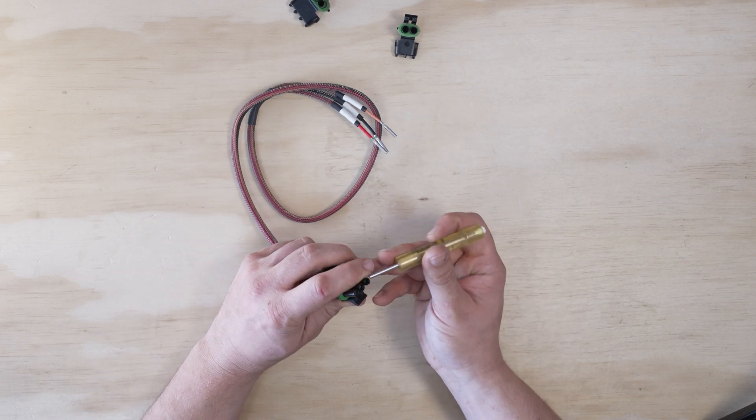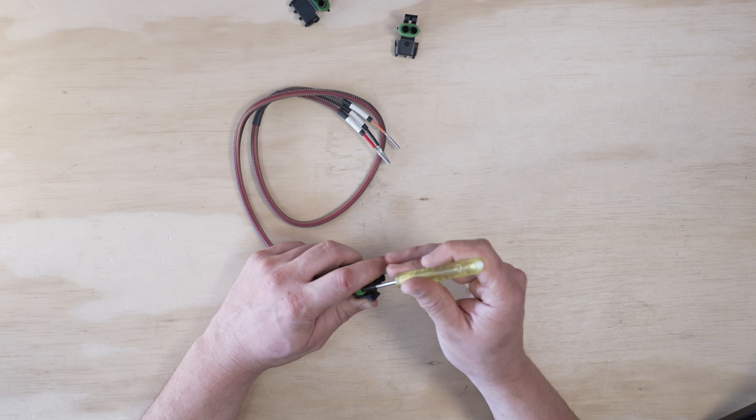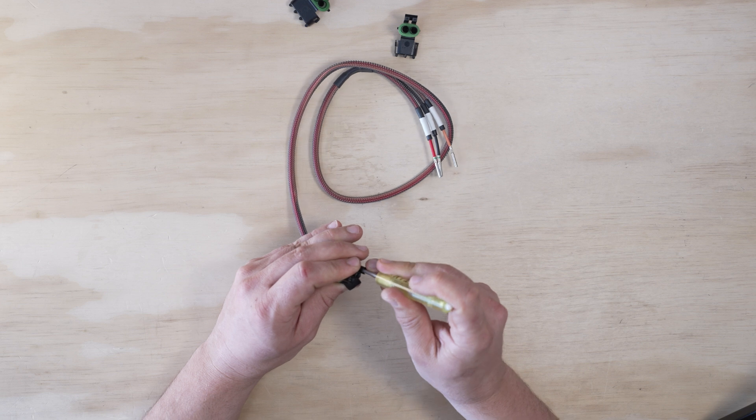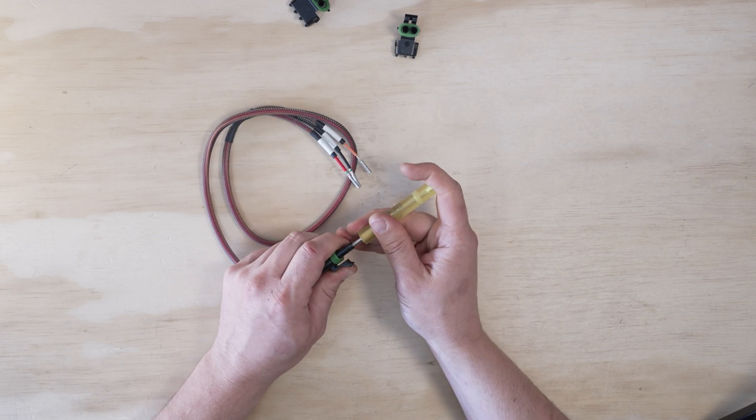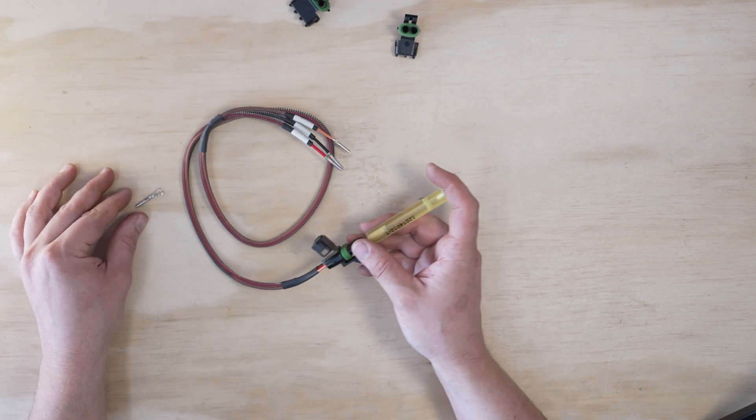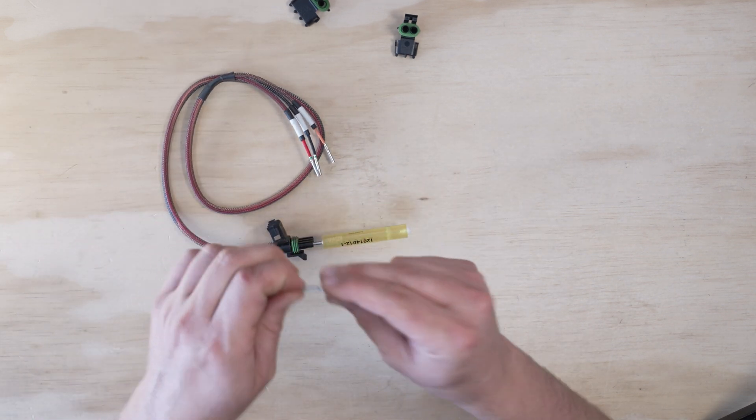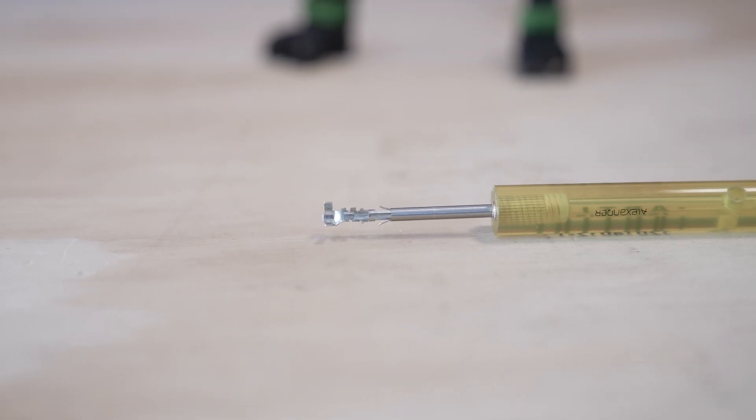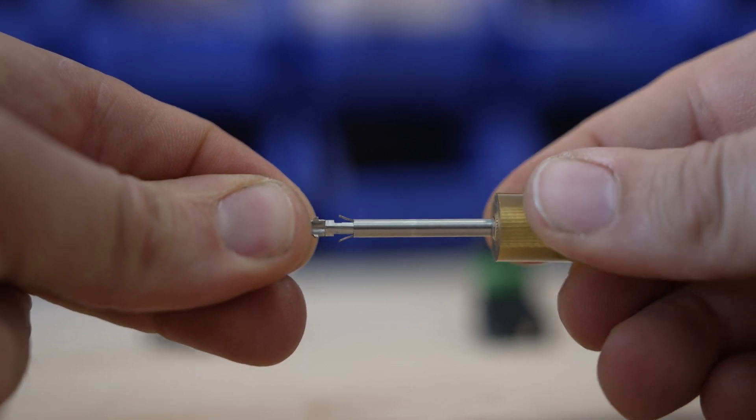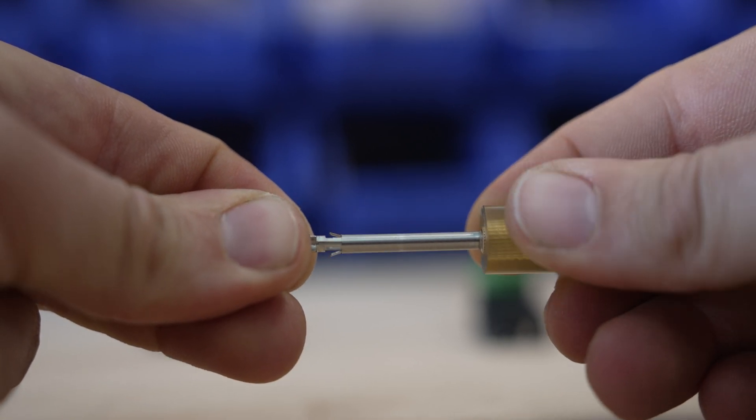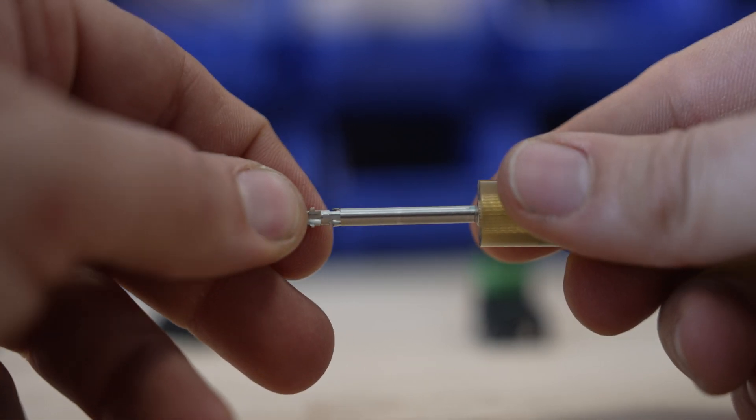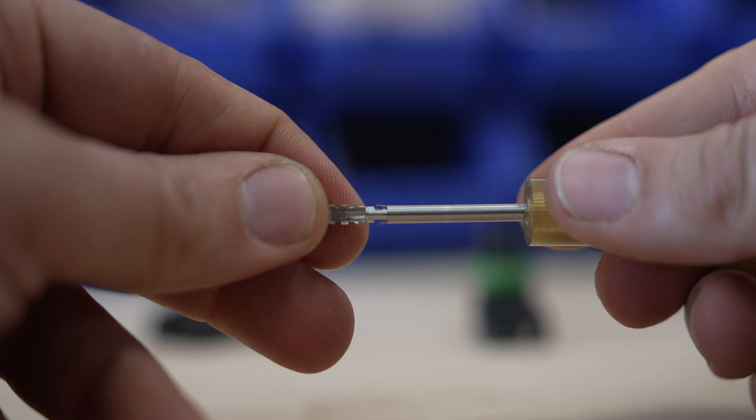So you're going to take this tool. It goes over the connector. We're going to go one wire at a time here. That'll go over your pin. You push it on and that will allow you to pull that wire out. What this tool is essentially doing is unlocking the two little wings that fly off the side of the connector. So you're pushing down over those wings like that to release them and unlock them.